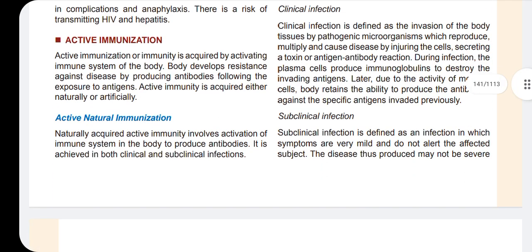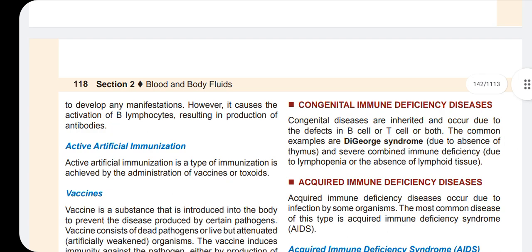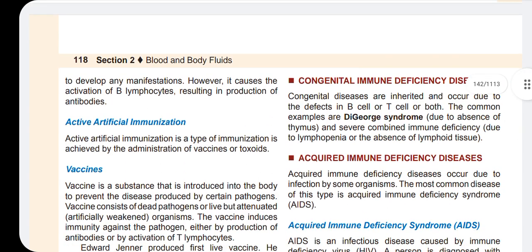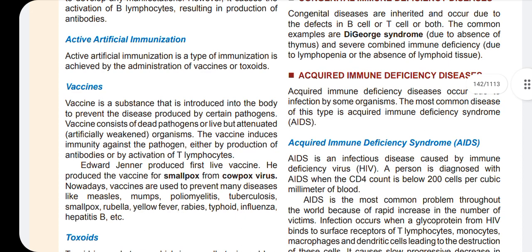Active natural immunization is our own immune system — we produce antibodies ourselves. Active artificial immunization involves vaccines, where dead pathogens are introduced into the body. The dead pathogens stimulate the immune system, and that is called a vaccine.